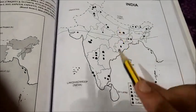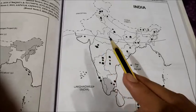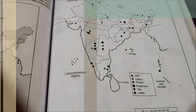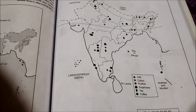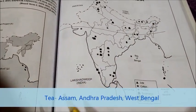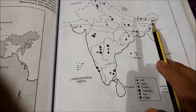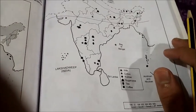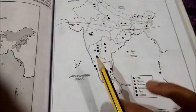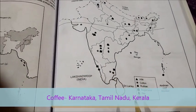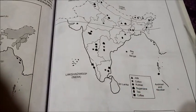For tea, the main places are Andhra Pradesh and Assam, with some also found in West Bengal — so remember those three states. For coffee, it is grown in the southern states — Karnataka, Kerala, and Tamil Nadu. Coffee is so famous in the southern states for exactly this reason. If you apply a little logic, remembering these places won't be very difficult.